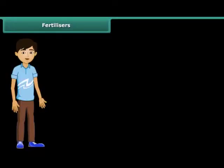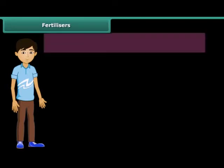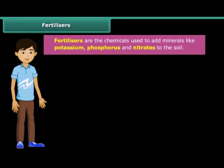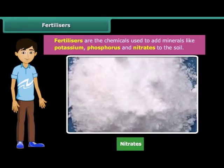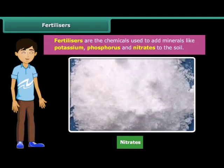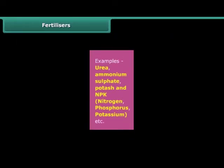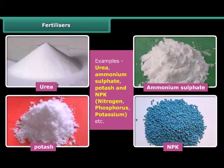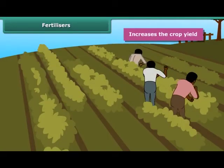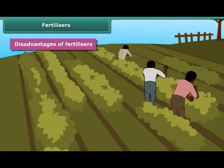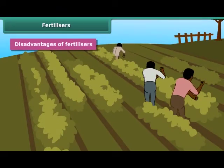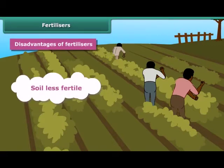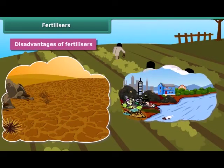Like manure, fertilizers are also used to replenish lost nutrients and minerals in the soil. Fertilizers are chemicals used to add minerals like potassium, phosphorus, and nitrates to the soil. They are produced in factories. Some examples of fertilizers are urea, ammonium sulfate, potash, and NPK (nitrogen, phosphorus, and potassium). The use of fertilizers increases crop yield. However, excessive use of fertilizers makes the soil less fertile and has also become a source of water pollution.